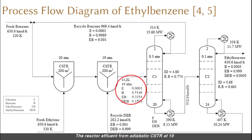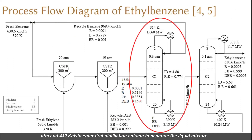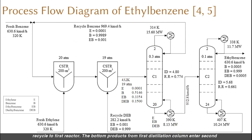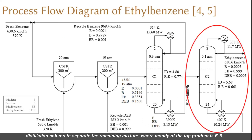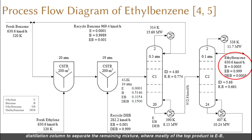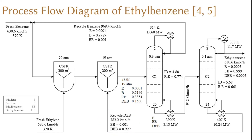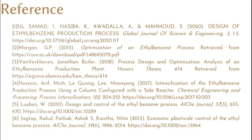The reactor effluent from the adiabatic CSTR at 19 atm and 432 K enters the first distillation column to separate the liquid mixture, where mostly the distillate is benzene (B) while the bottom products are EB. The distillate is recycled to the first reactor. The bottom products from the first distillation column enter the second distillation column, where mostly the top product is EB while the bottom products, E and DEB, are recycled to the second reactor.